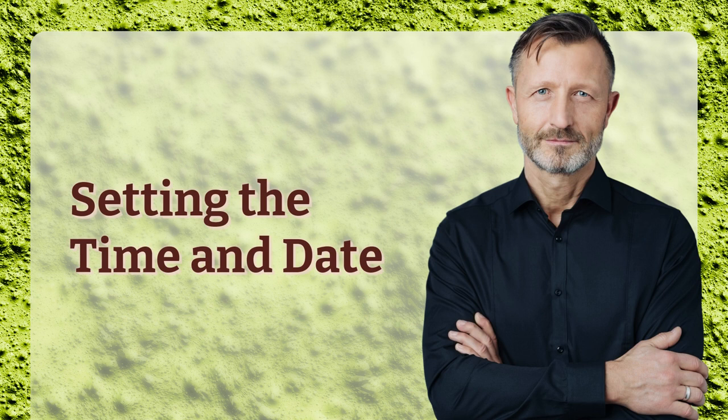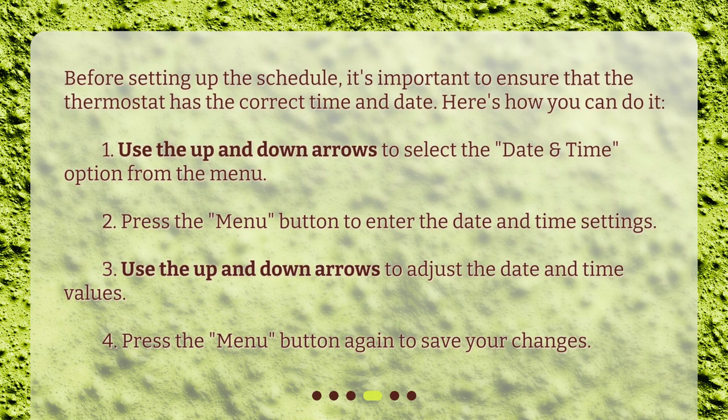Setting the Time and Date. Before setting up the schedule, it's important to ensure that the thermostat has the correct time and date. Here's how: 1. Use the Up and Down Arrows to select the Date and Time option from the menu. 2. Press the Menu button to enter the date and time settings. 3. Use the Up and Down Arrows to adjust the date and time values. 4. Press the Menu button again to save your changes.